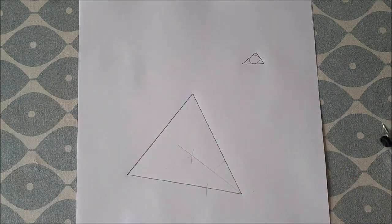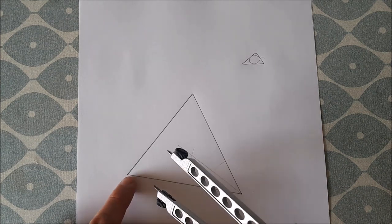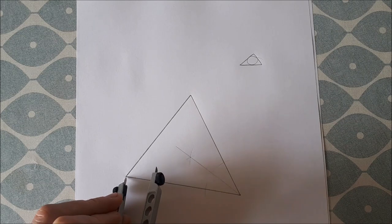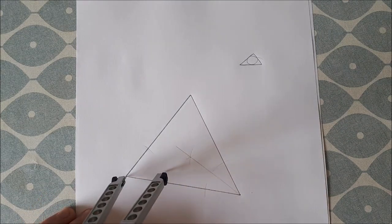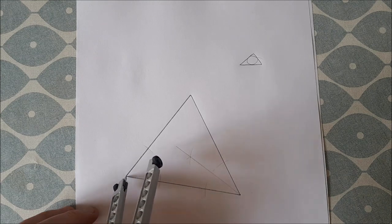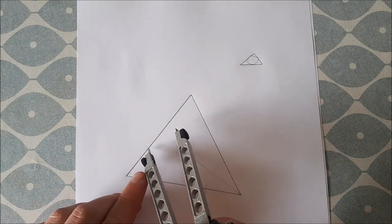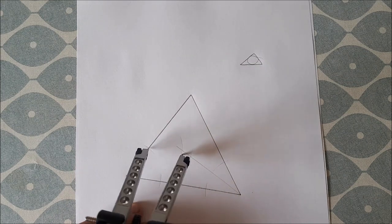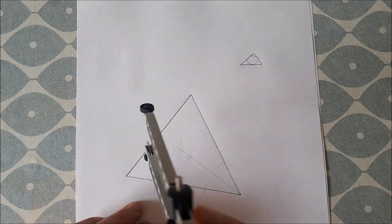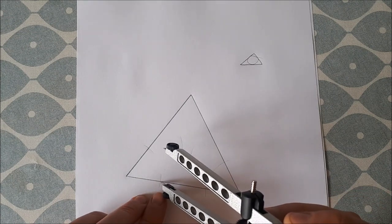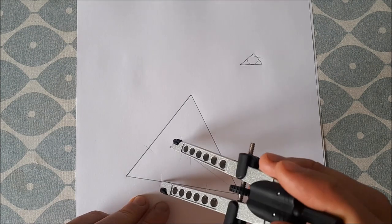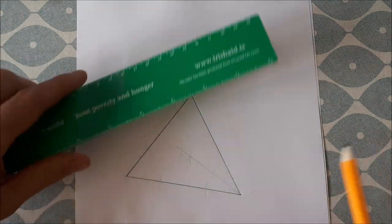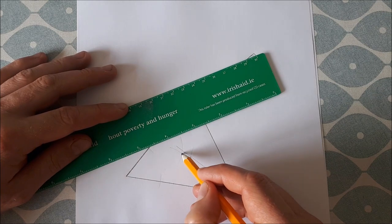Then you can go and do any other angle. We'll choose this angle here. Point of our compass on the vertex, scribe an arc there and there, keep the compass at the same size, move to the point of intersection, scribe an arc. Keep your compass at the same size again, move it to the other point of intersection and scribe an arc.